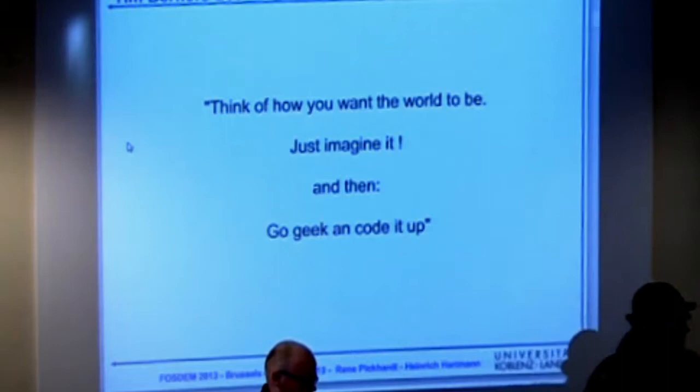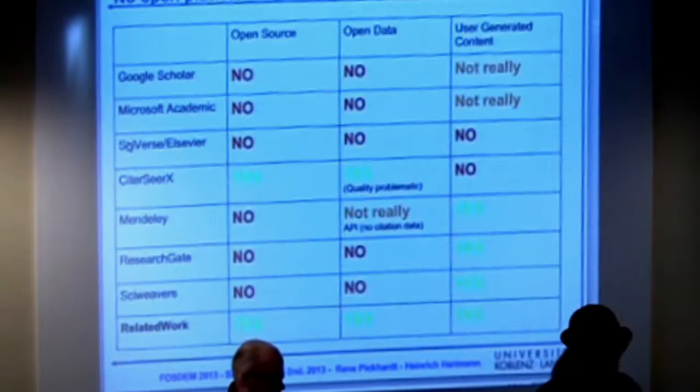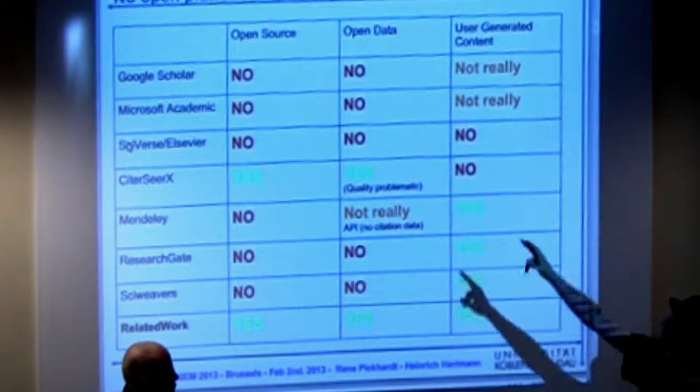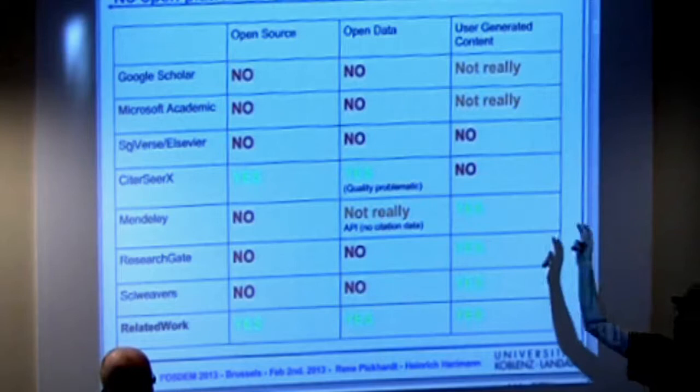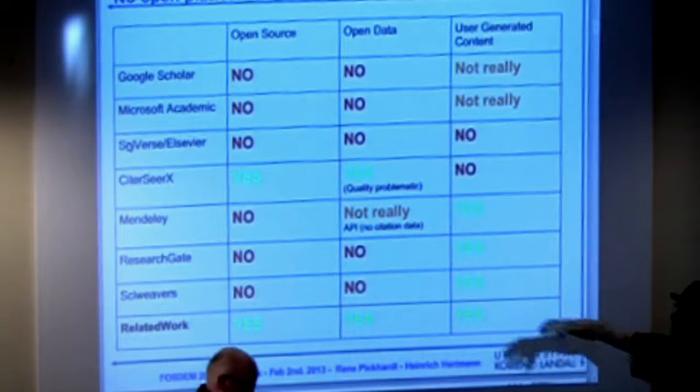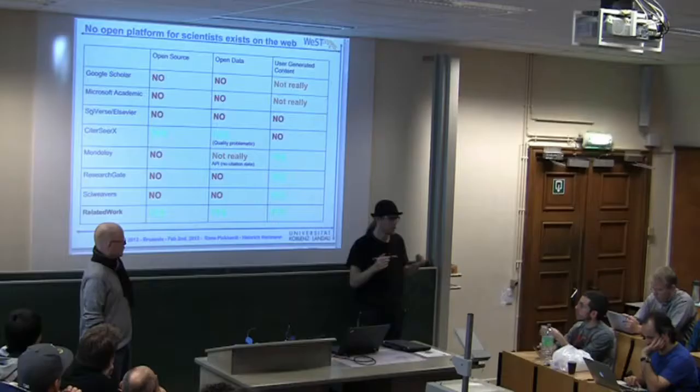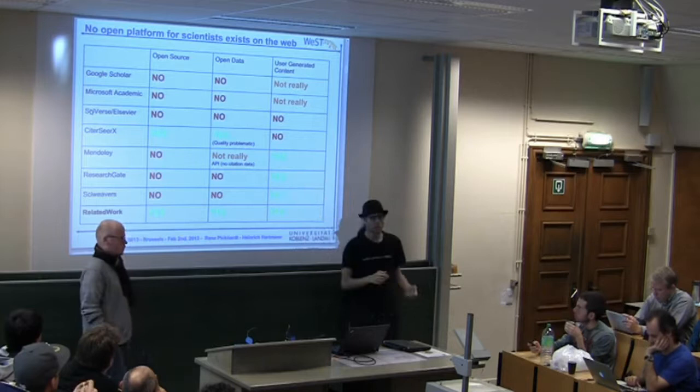Last year at the WWW conference, I met Tim Berners-Lee, and he said something like: think of how you want the world to be, just imagine that, and then go geek and do it — just go and program it. We did a review of websites in the field of academic publications across three dimensions: open source, open data, and user-generated content. What you can see is that besides the last row, which is what we're planning to do, nothing fully exists. Either people are not open source, or they don't share the papers, or they lack user-generated content.